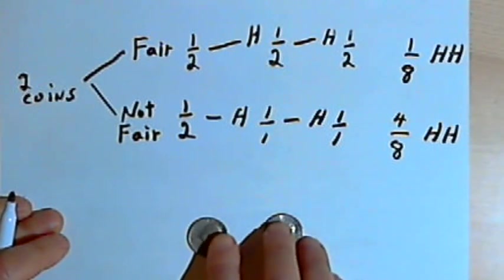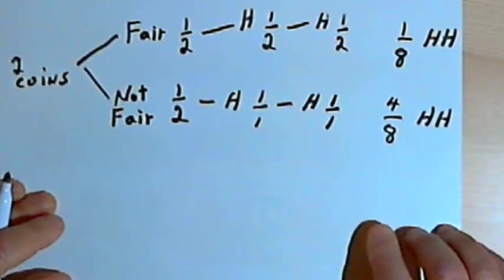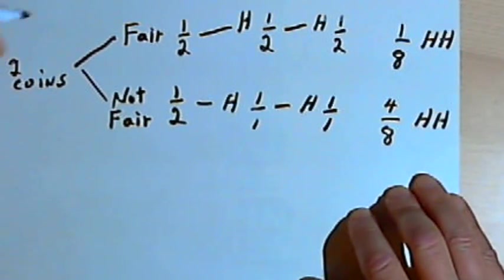Okay, so the question I have... let me get rid of my coins. The question is, if I've already flipped the coin twice and gotten heads two times in a row, what's the chance that I picked a fair coin? So this is going to be a conditional probability problem.